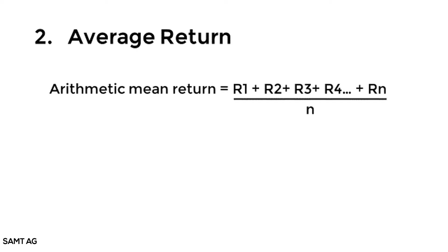Number 2: average returns. This is probably the one everyone's familiar with. As the name suggests, it is a simple average of a series of periodic returns, also known as the arithmetic mean return. You calculate it by adding up all the numbers in the series and then dividing by the total number in the series.